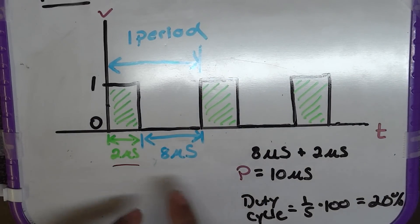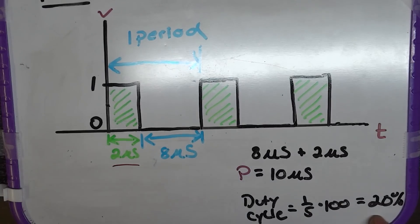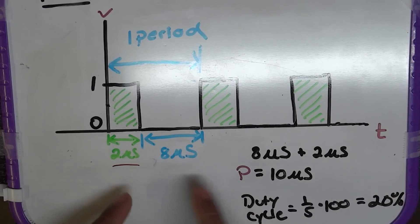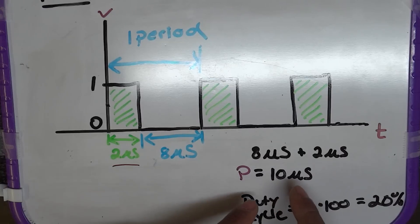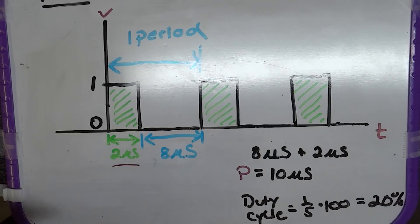And it has a duty cycle of 20% because it's on for 2 seconds out of the entire 10 seconds that it runs. So, that is a 20% duty cycle.